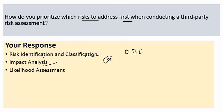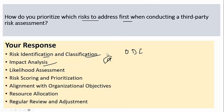In the impact analysis phase, I assess the potential impact of each identified risk on the organization, evaluating financial, operational, reputational, and legal consequences. For instance, a risk that could lead to a major data breach affecting customer information would be classified as high impact. I also conduct a likelihood assessment, considering factors such as vendor past performance, industry trends, and inherent vulnerabilities. A vendor with a history of security incidents would receive a high likelihood rating.